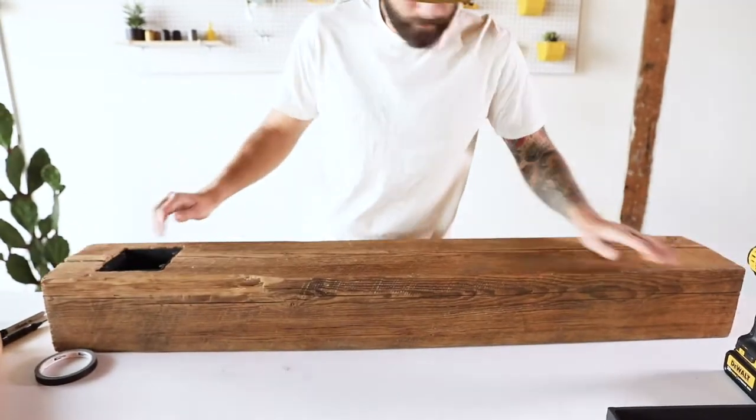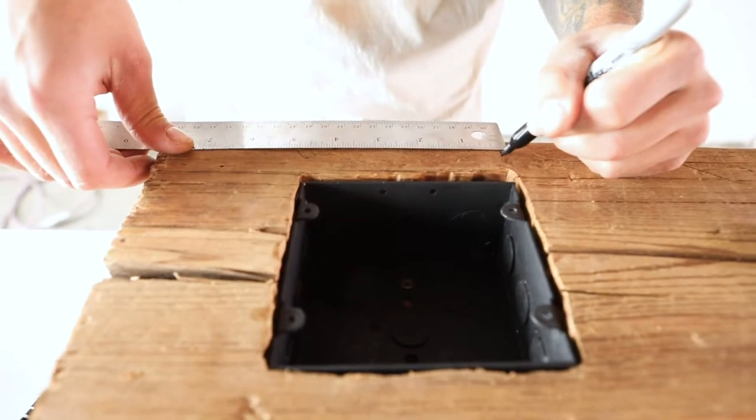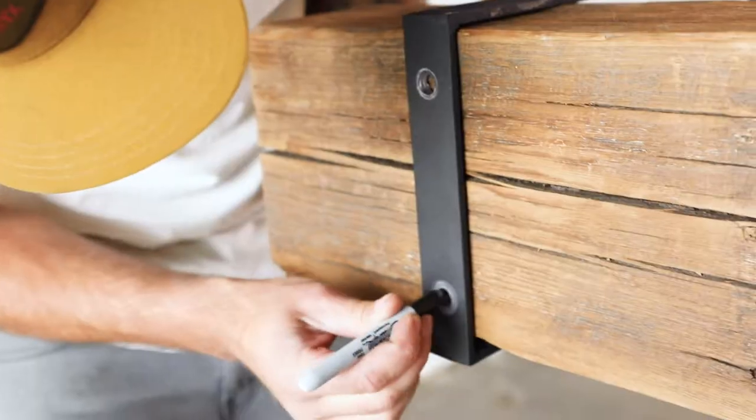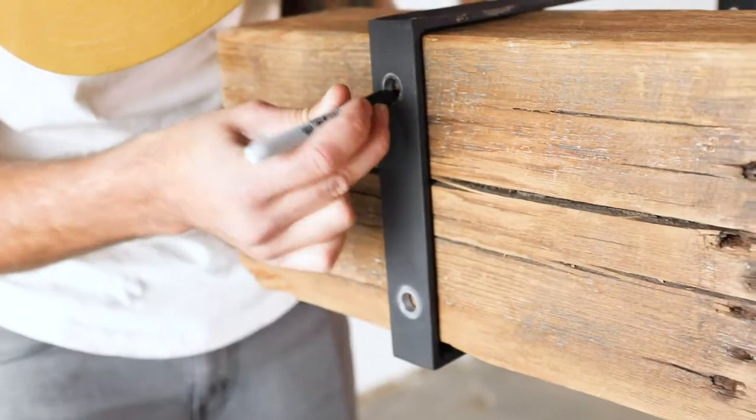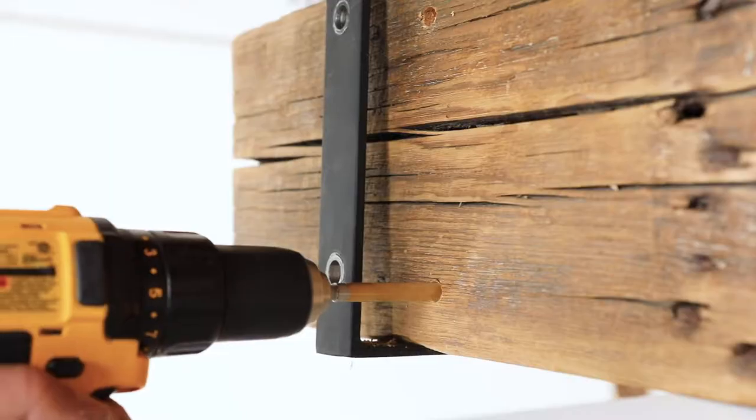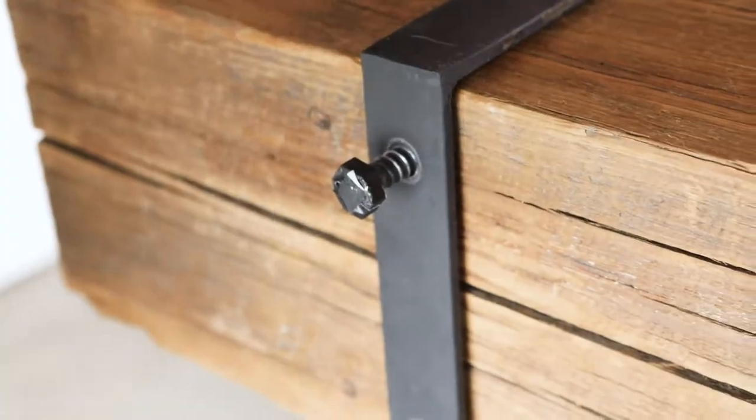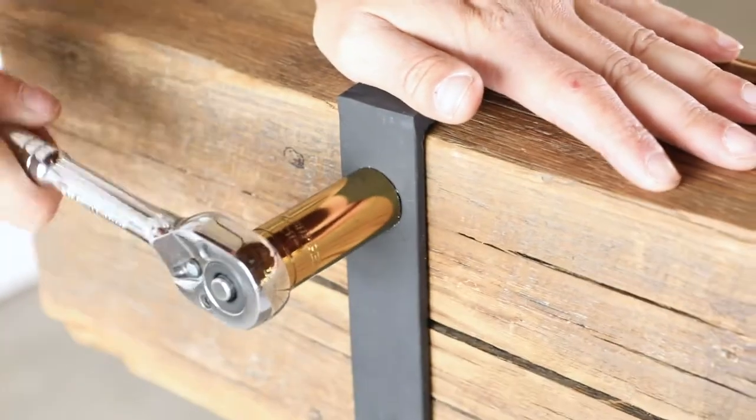Now that we've created the holes in the brackets, it's time to mount them to the beam. We drilled two holes eight inches from the outside of each side of the beam and then secured them with the bolts using a socket wrench. Even though we taped off the bolts to avoid scratching off the paint, we ended up having to mask off the beam and repaint the brackets and bolts.